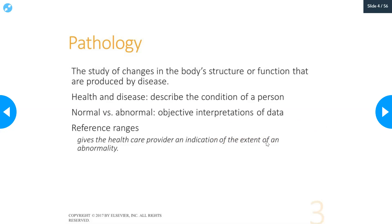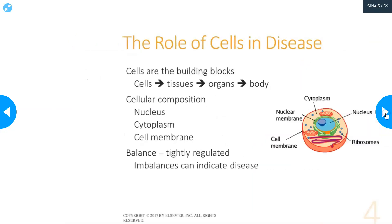Reference ranges are usually based on statistics — basically what 95% of normal, healthy adults' values would be. This gives a healthcare provider an indication of the extent of an abnormality: how far out of range is this patient? Is it barely out of range or way out of range? That could relate to the extent of the damage or the extent of the disease that's going on.